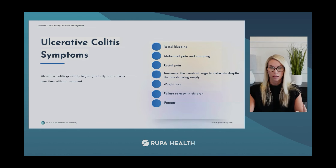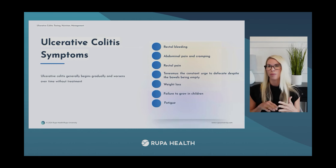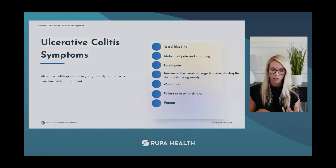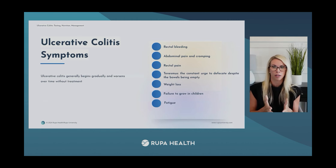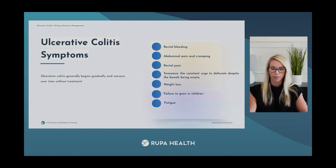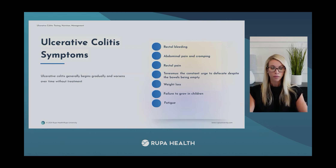The most common symptom is bloody diarrhea, also known as hematochezia. There is often mucus or pus in the stool. Other symptoms include rectal bleeding, abdominal pain and cramping, and tenesmus — that constant urge to have a bowel movement despite the bowels being empty. Patients may also experience weight loss, failure to grow in younger patients, fatigue, and fever.